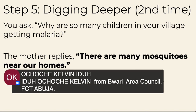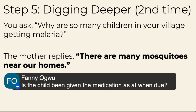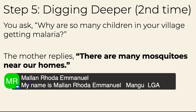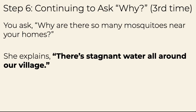That takes us to step five, where we ask why for the second time. You need to dig deeper, asking: 'Why are so many children in your village getting malaria?' The mother replies: 'There are many mosquitoes near our homes.'